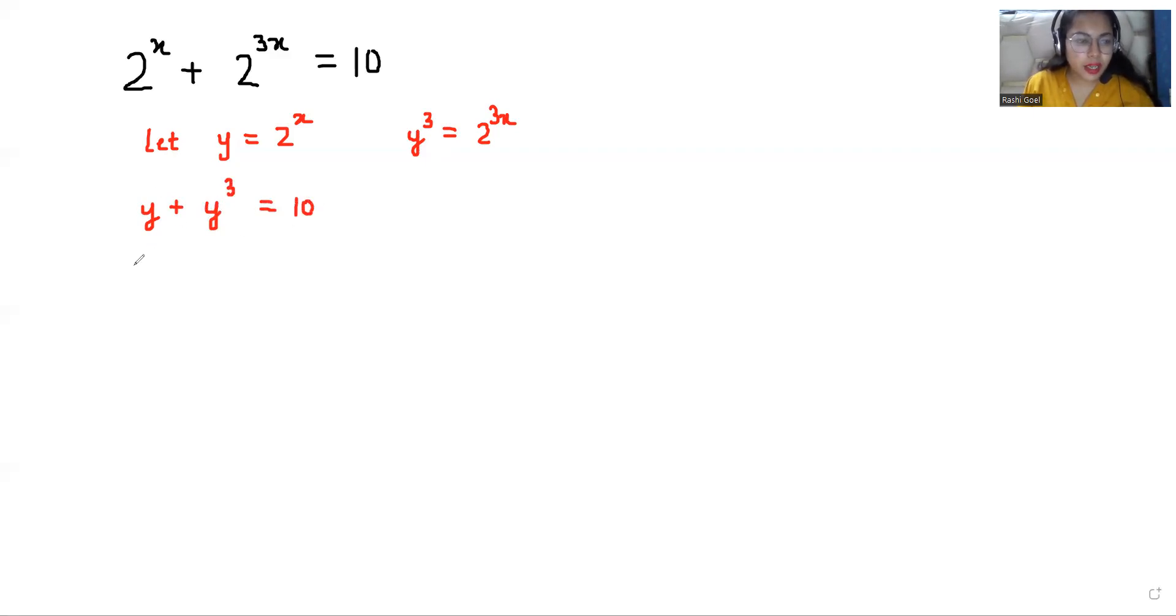Now I will take the 10 to this side. So y^3 + y - 10 = 0. I can write this y as -4y + 5y - 10 = 0. If I will take y common from first two terms, y(y^2 - 4), and from here if I will take 5 common, then 5(y - 2) = 0.